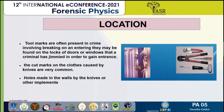Toolmarks are often present in crimes involving breaking and entering. They may be found on locks of doors or windows that the criminal has forced in order to gain entrance. Cut marks on clothes caused by knives are very common, and sometimes holes are made in walls by a knife or other implements.